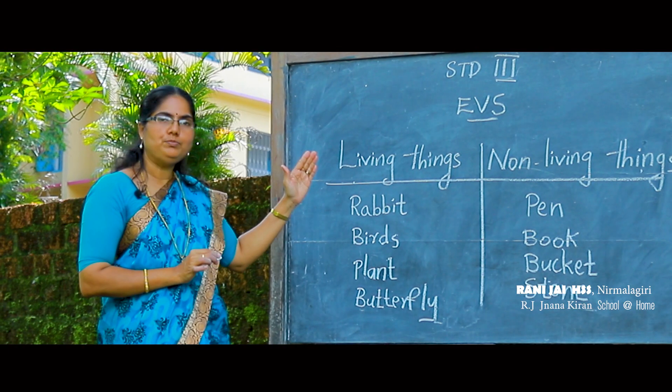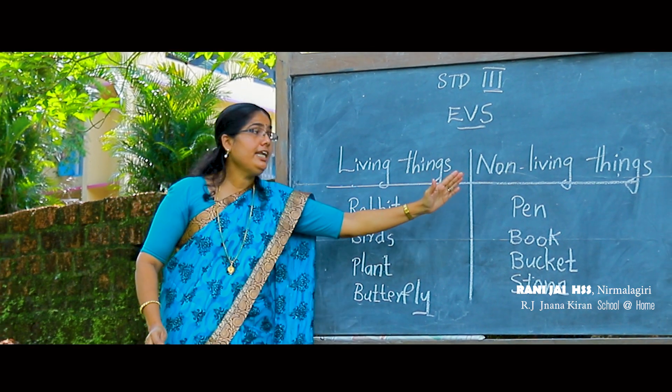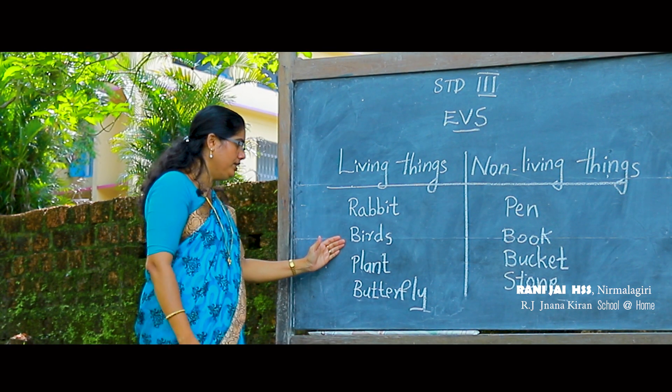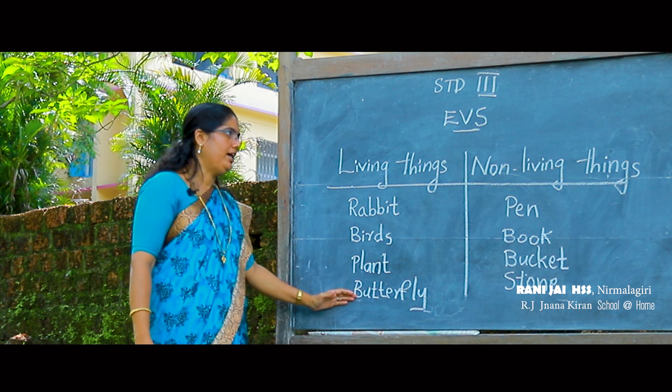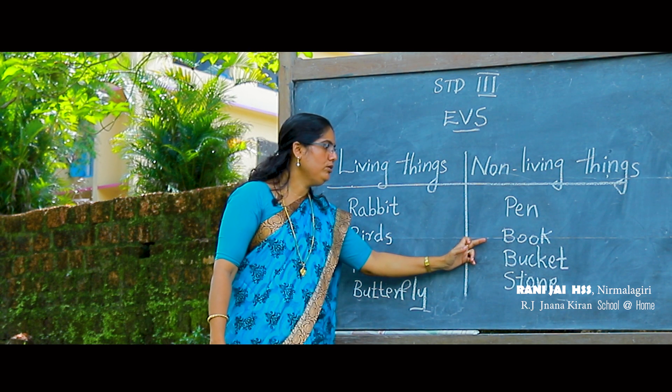All of you observe this table carefully. Living things: rabbit, birds, plant, butterfly. Non-living things: pen, book, bucket, stone. Now observe your surroundings and find out living things and non-living things, and tabulate them in your EVS notebook neatly.